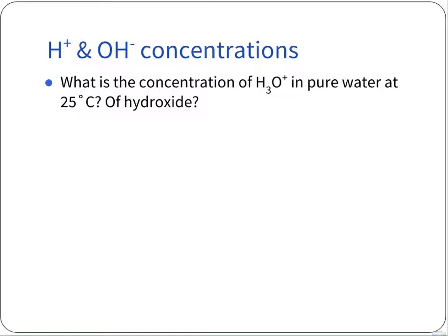Let's take a look at our first problem. The question is: what's the concentration of hydronium in pure water at 25 degrees Celsius? Because we have hydronium, we want to write out our equation. Hydronium shows up due to the autoionization of water. For that autoionization, we have 2H₂O in a reversible reaction.